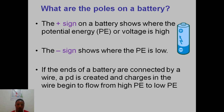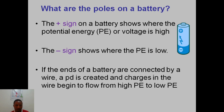Things will always want to move from the high level to the low level — like a ball at height wants to roll down due to gravity. The same applies here: charge will want to move from the high potential energy level to the low potential energy level. The only way they can transfer is through a conductor. If the ends of the battery are connected by wire, a potential difference is created and the charge in the wire begins to flow from high potential to low potential.